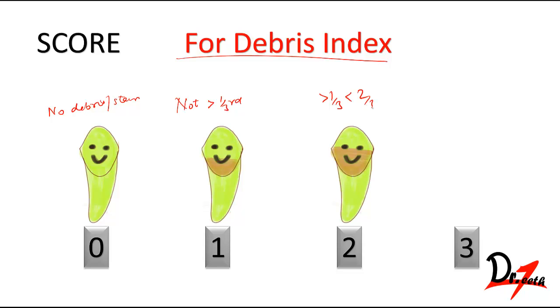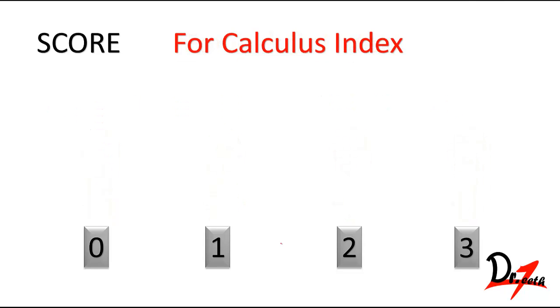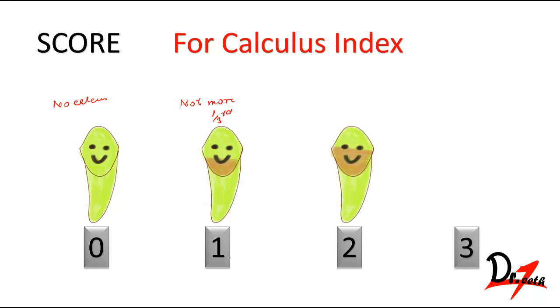Calculus index: score zero means no calculus is present. Score one: not more than one-third calculus. Score two: supragingival calculus from one-third to two-thirds plus individual flecks of subgingival calculus. Score three: more than two-thirds of calculus plus a continuous heavy band of calculus.